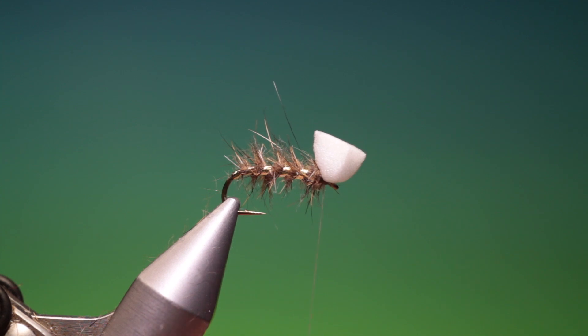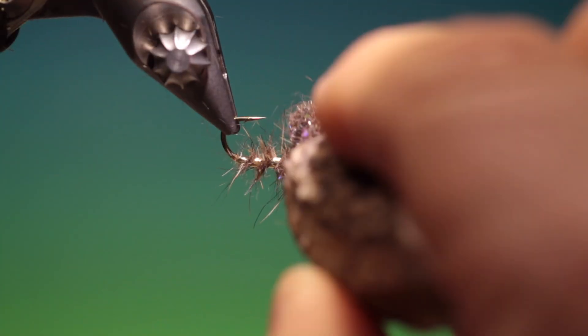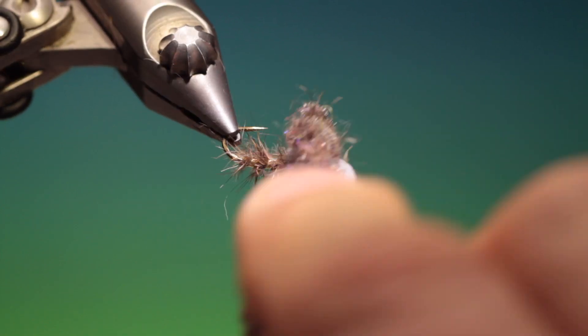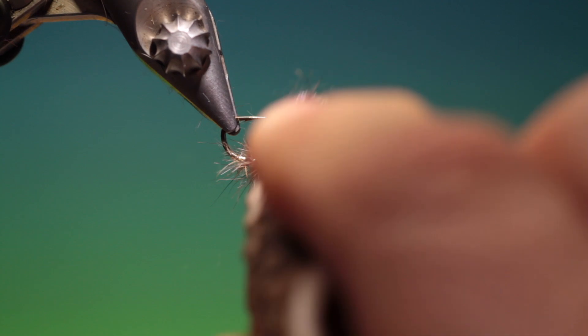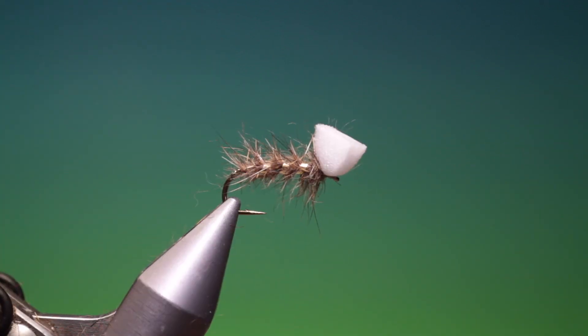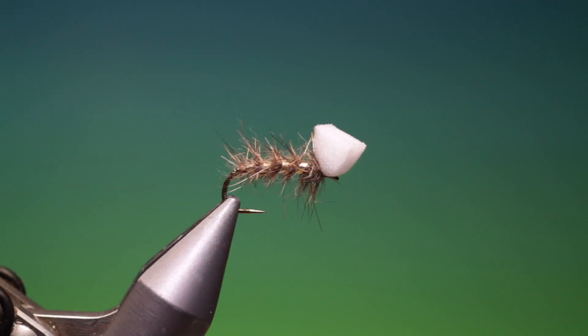Remove that. Give it a brush, just to pull out the spikiness. And there we have it. There's the sugar cube hare's ear.